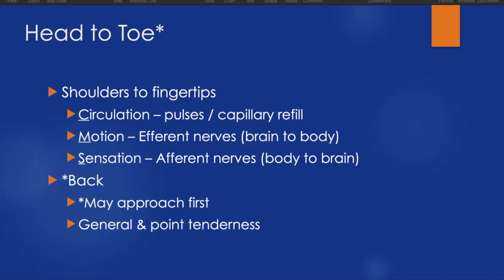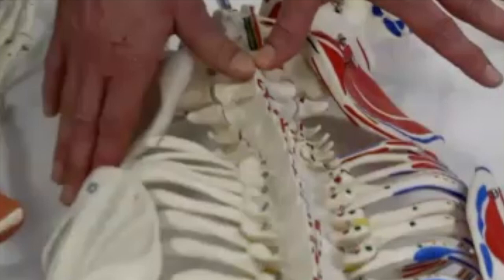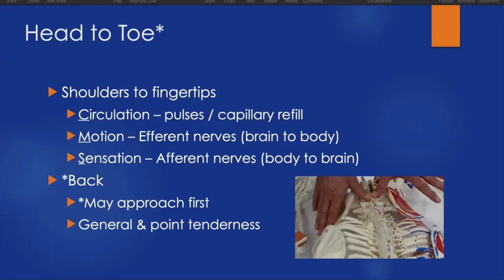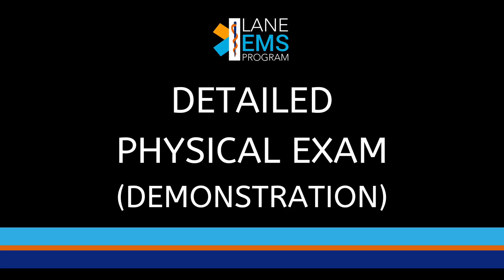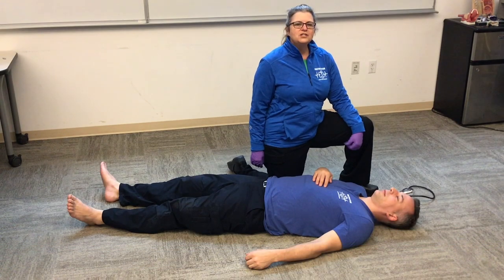The back is often the last thing we check; however, if your patient is already lying face down or sitting up, we may check the back first before laying them down on the gurney because it's already accessible. When we check the back, we check the spine as well as the general real estate. We walk our fingers down each of the bony prominences to check for tenderness on the spine itself, then palpate the shoulder blades, the sides of the spine, the flanks, and the kidney area to check for any tenderness or injury. That concludes our detailed physical exam for trauma patients.